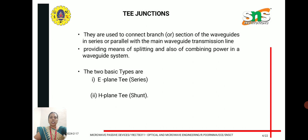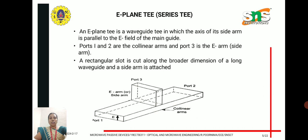Based on this, there are two basic types. The first is the E-plane T, also known as the series T. The second is the H-plane T, known as the shunt T. It is used to split or combine the power in the waveguide system.